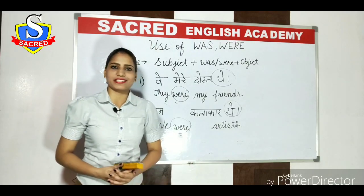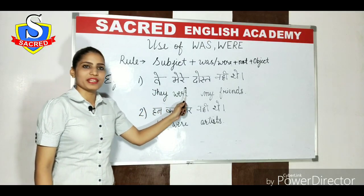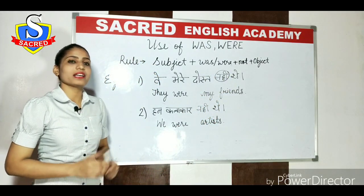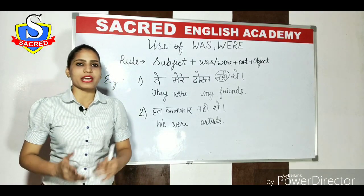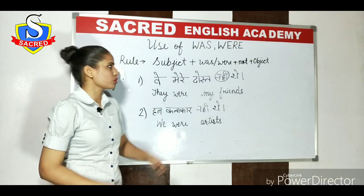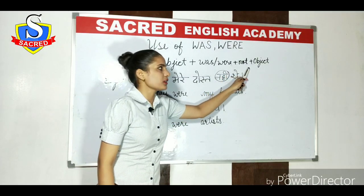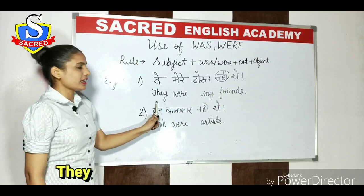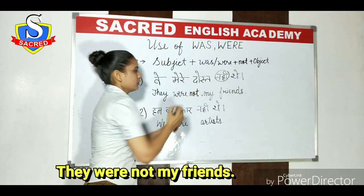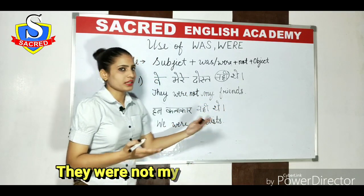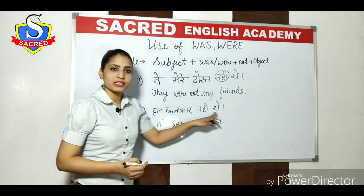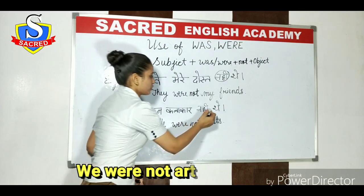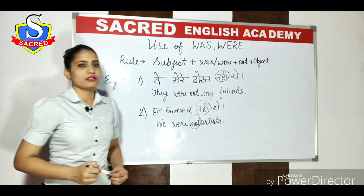So aayye hum inke negative sentences ke upar chalte hain. Our first sentence is: 'Woh mere dost nahi the.' 'Nahi' shows negativity. Ek cheez aapko batao: jab bhi aapko koi negative sentence banana hai, to aapko 'not' ka use karna hai. Rule mein likha hai: Subject plus was/were plus not plus object. Toh aayye hum isko English mein convert karte hain: 'Woh mere dost nahi the' — 'They were not my friends.' In the same manner: 'Hum kalakar nahi the' — 'We were not artists.' Toh jo 'nahi' hai, woh 'not' se represent kiya jata hai.